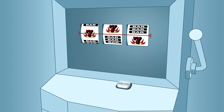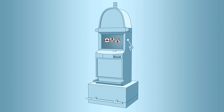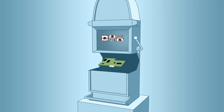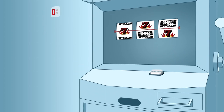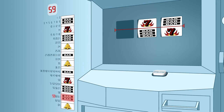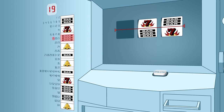Inside every slot machine is a computer that determines the result for each spin. The computer is generating many random numbers per second, even when the machine is not being played. For each reel, these random numbers are assigned to the symbols and the blank spaces.